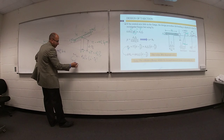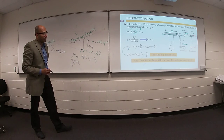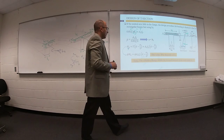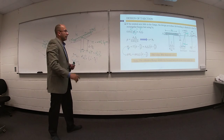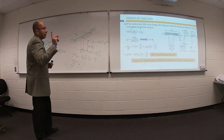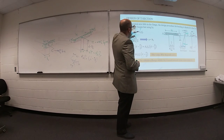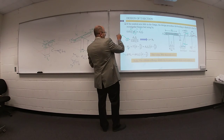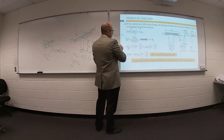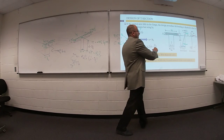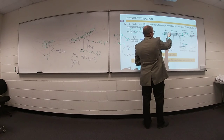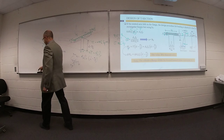Multiply your nominal moment by phi. Most of the time your phi will be 0.9, based on the value of epsilon T. We assumed your neutral axis falls in the flange. From this value you can calculate C. Since beta-1 times C equals A, you can get C. C must be smaller than or equal to H flange — the depth of your neutral axis must be less than the total thickness of your flange.